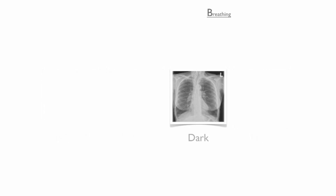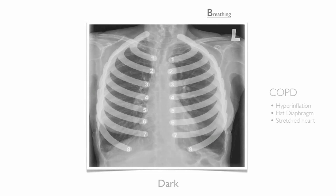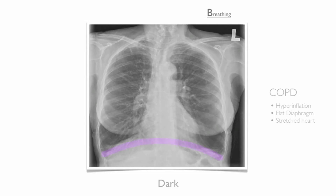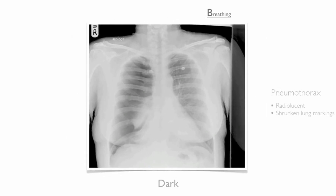Now we shall look at the dark lung. The dark lung is caused by two presentations. The first is COPD, which presents with hyperinflation, a low flat diaphragm and a stretched heart border. The second presentation is pneumothorax, which presents with increased radiolucency and shrunken lung markings.